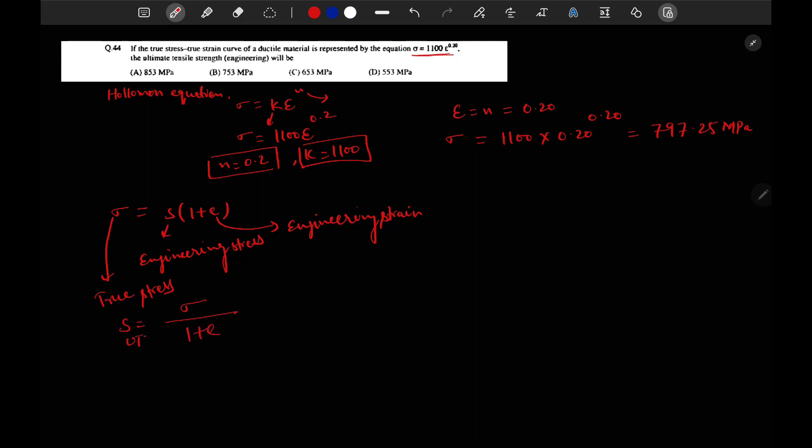At UTS ultimate point, this sigma will be 797.25, but we have to calculate this E value at UTS. We know the relation between true strain and engineering strain. It is epsilon equal to ln of 1 plus E. This is engineering strain and this is true strain.